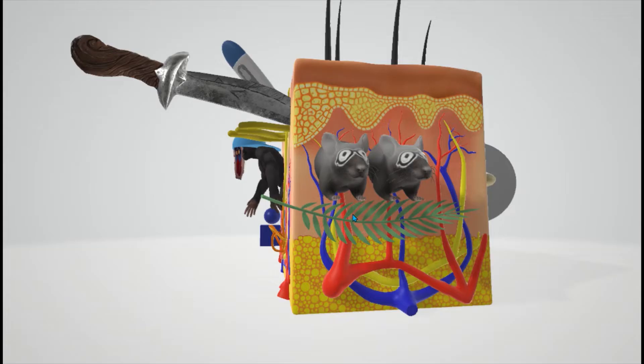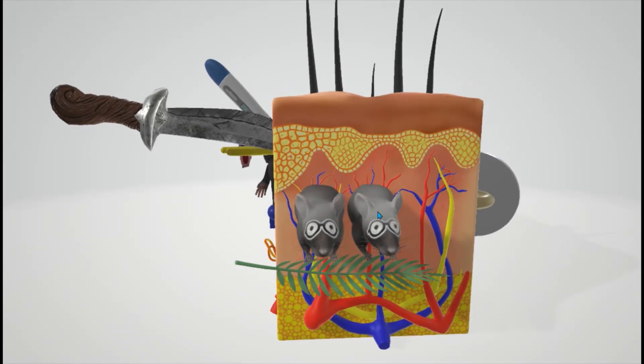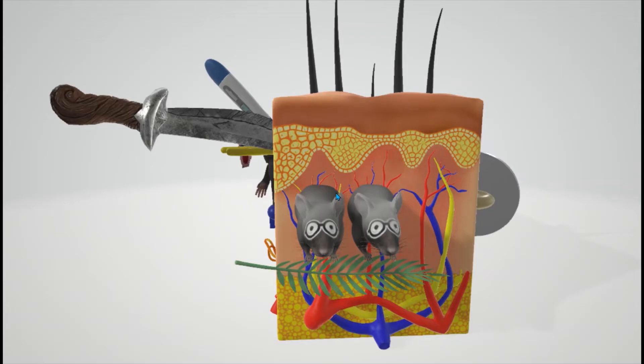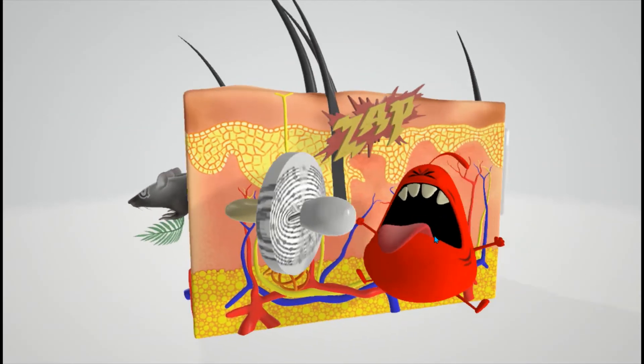Remember that Meissner's corpuscles are involved in fine and light touch. They're large with myelinated fibers, so you can see they're whitened a little bit, and they adapt quickly. Mice are quick. That's how I think of that.